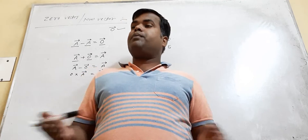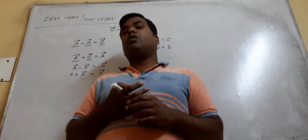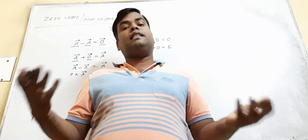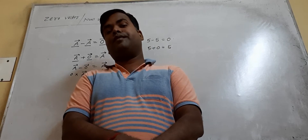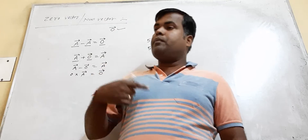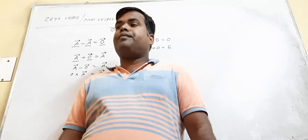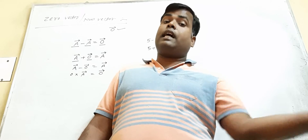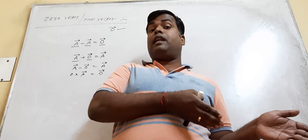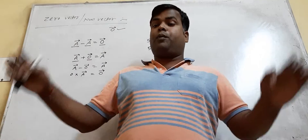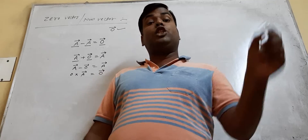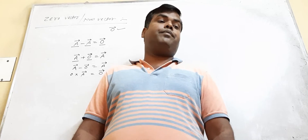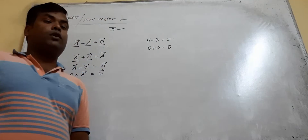Another example of zero vector: when a body moves with uniform velocity, the acceleration is a zero vector. When a body moves with constant velocity, the acceleration is zero, but acceleration is a vector quantity and zero is a scalar, so a vector cannot equal a scalar. It is more appropriate to say the acceleration is a zero vector when a body moves with uniform velocity.